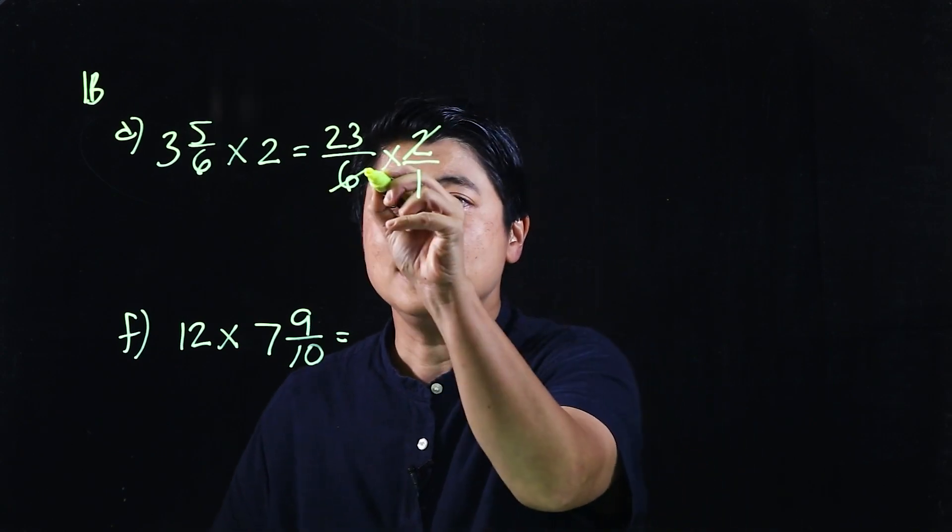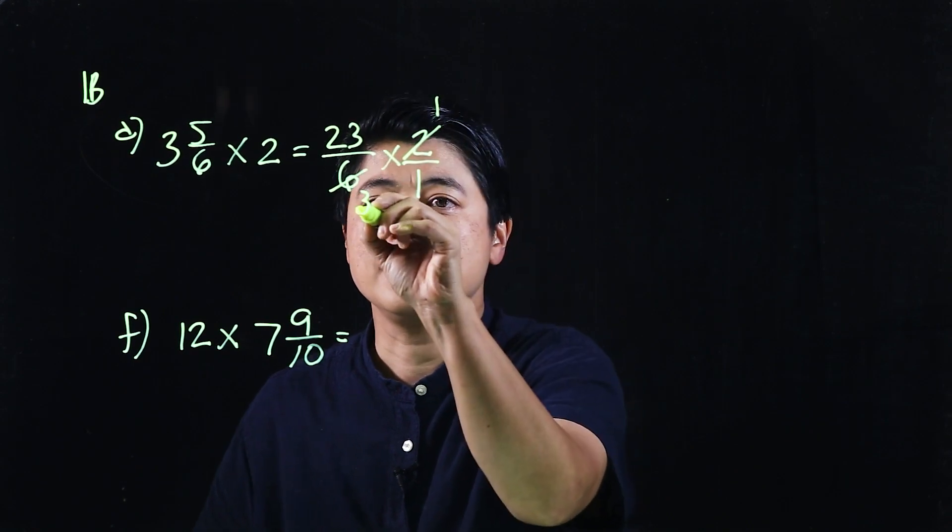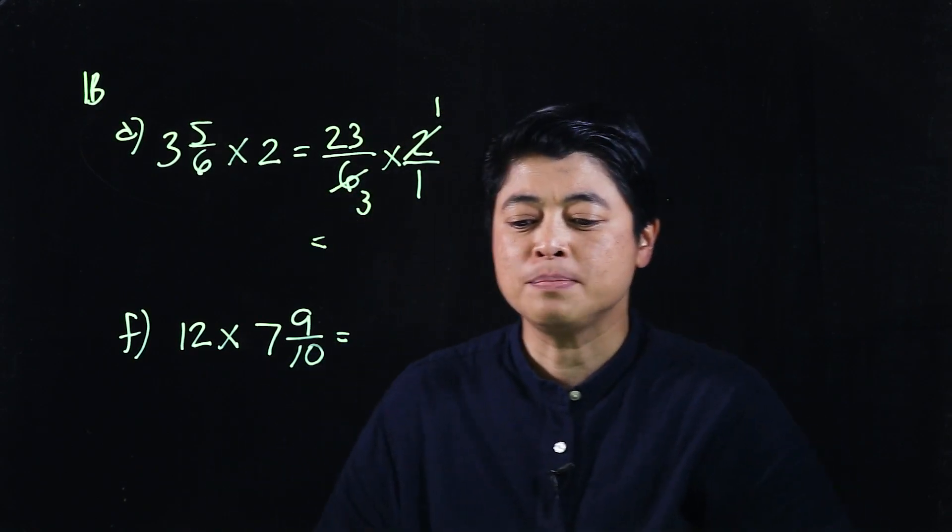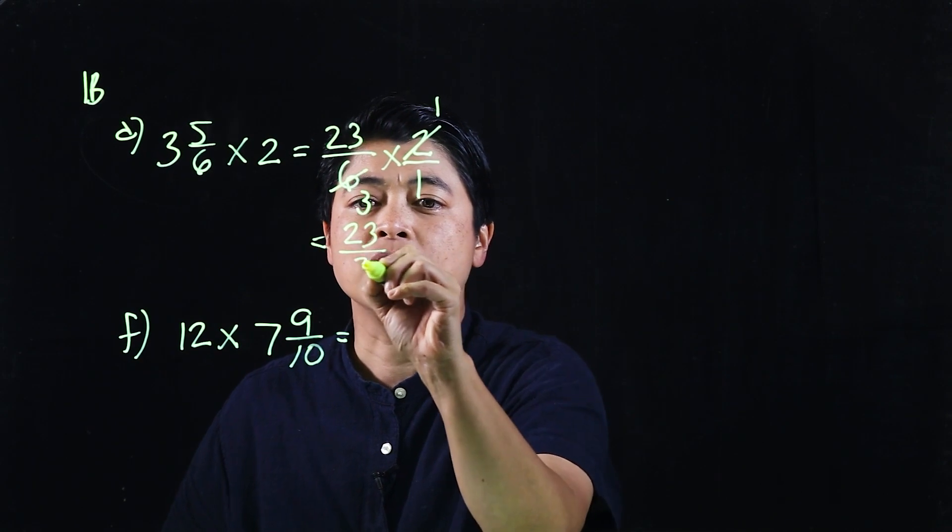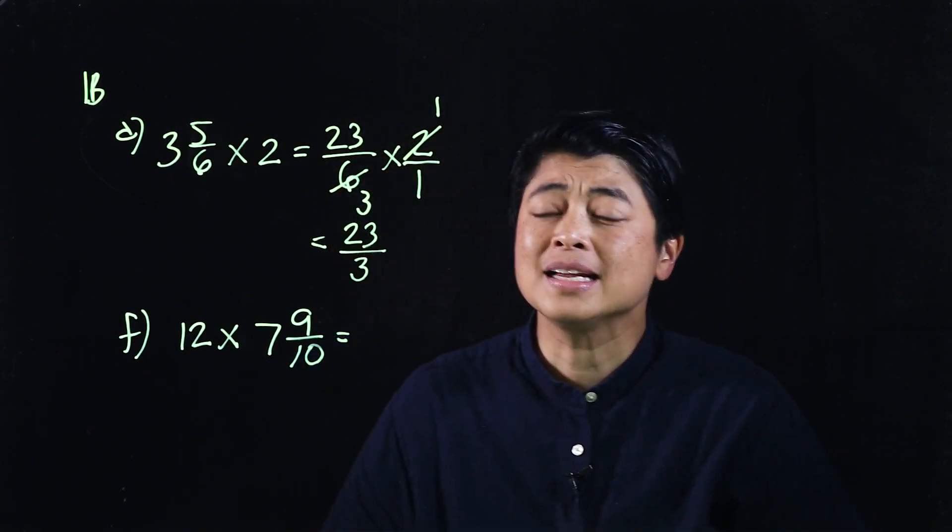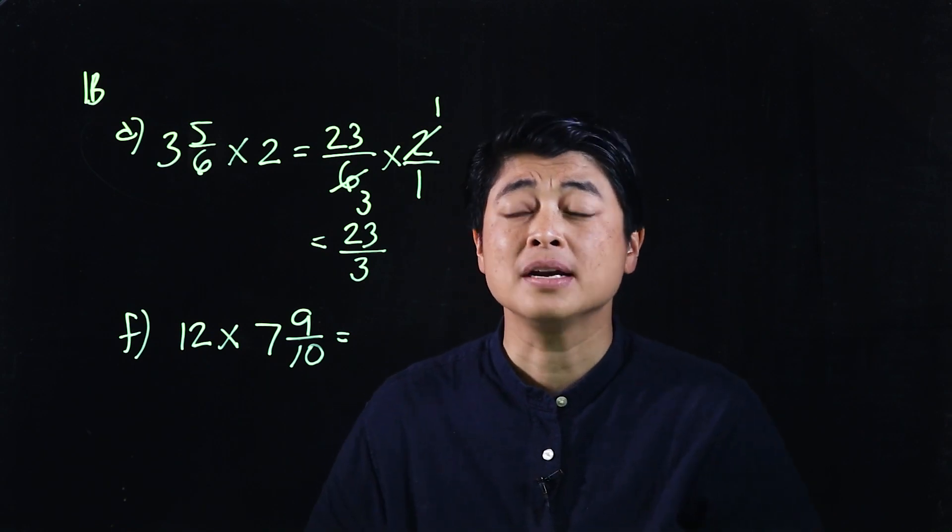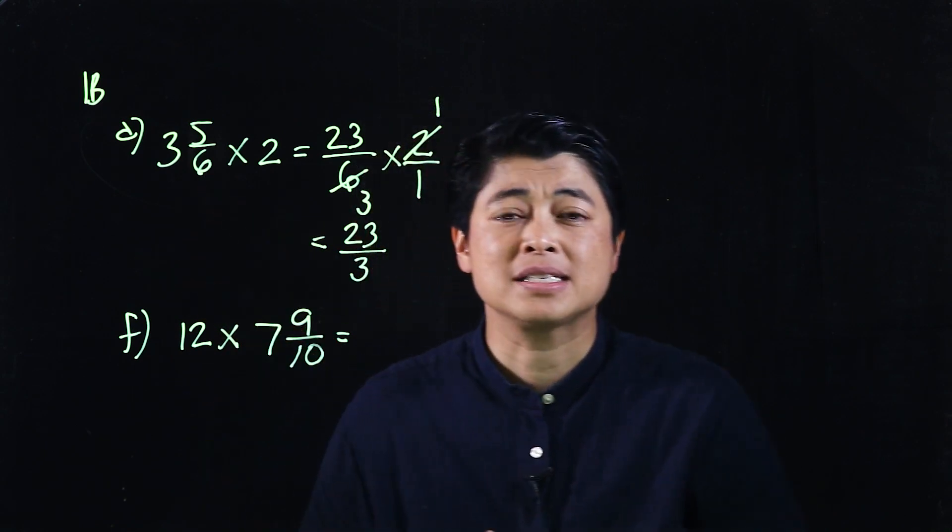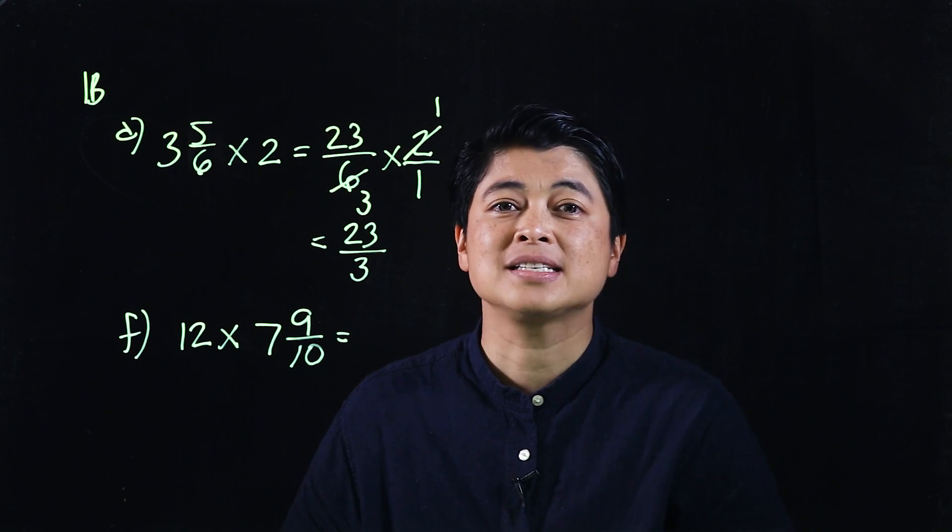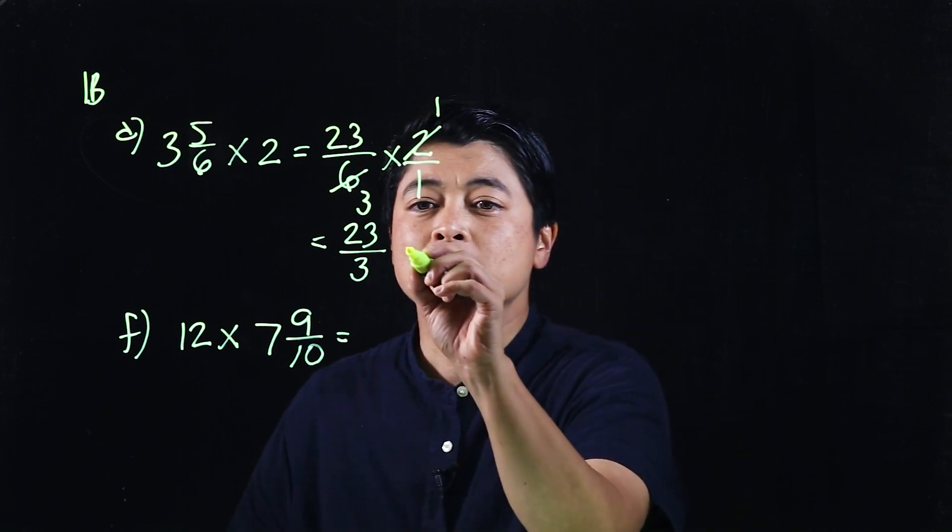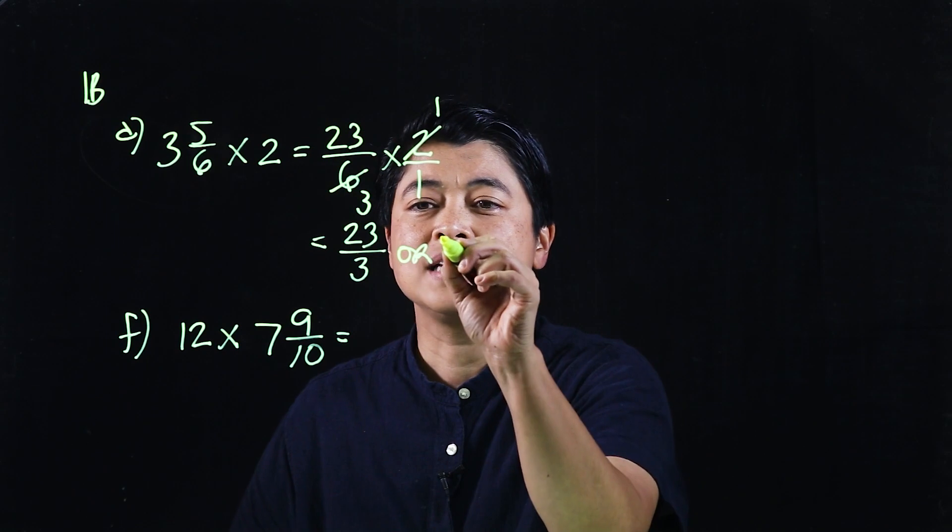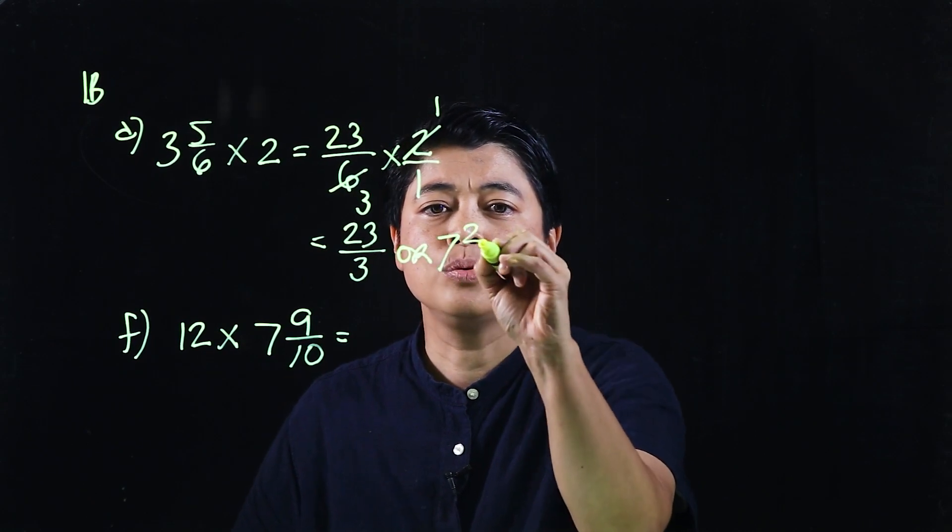So I'll cancel 1 and 3 so our answer should be 23 over 3. It doesn't say to leave it as a fraction or to leave it as a mixed number, but since we started with a mixed number ideally we want to put it as a mixed number. So that means this is equal to 7 and 2 over 3.